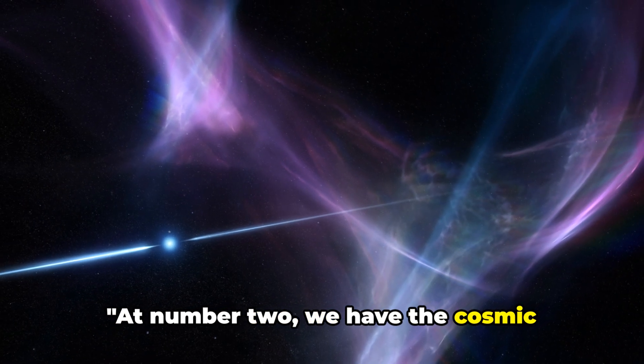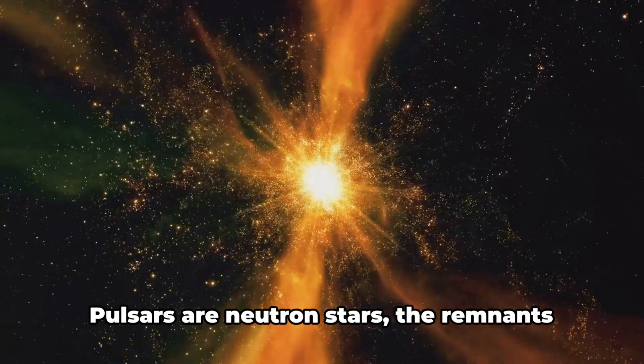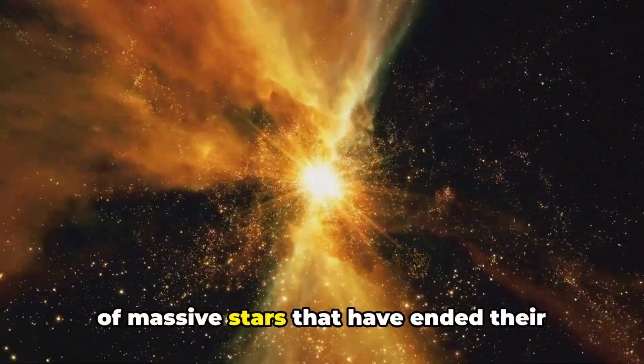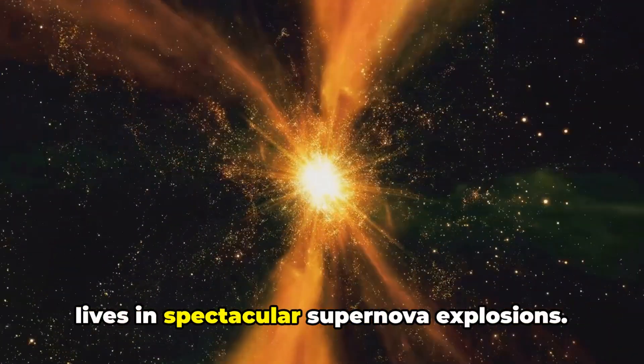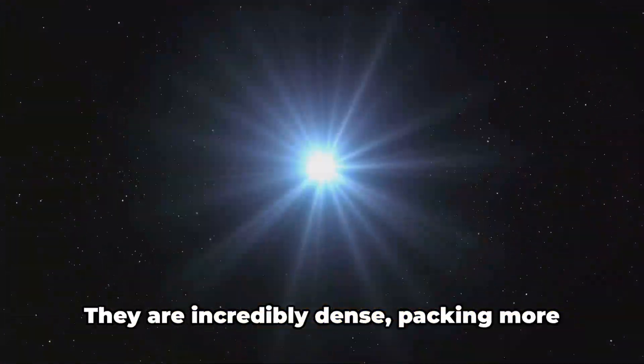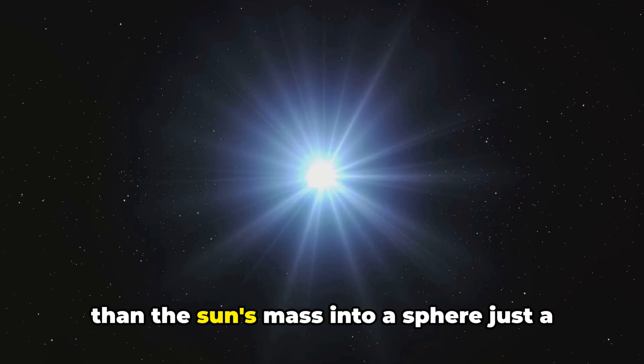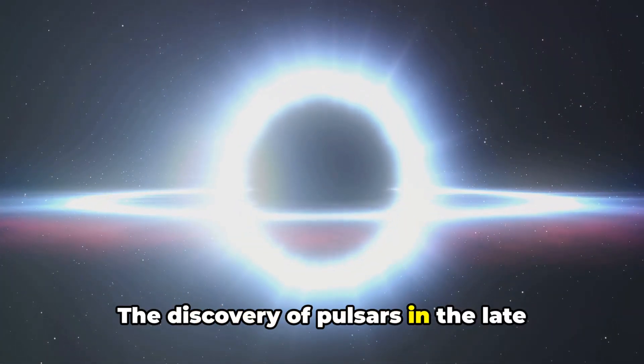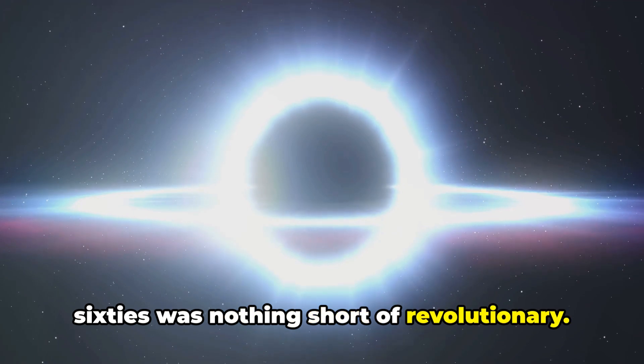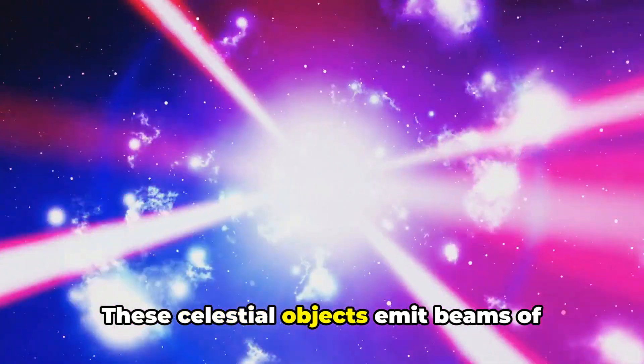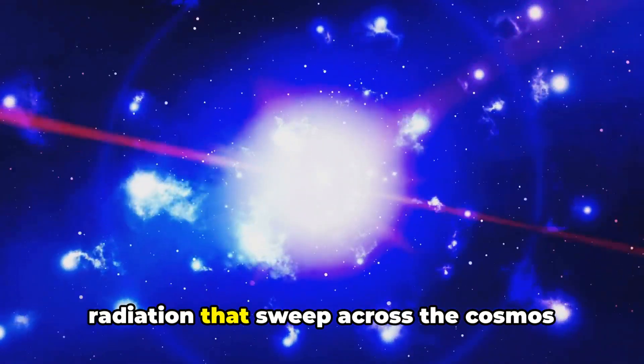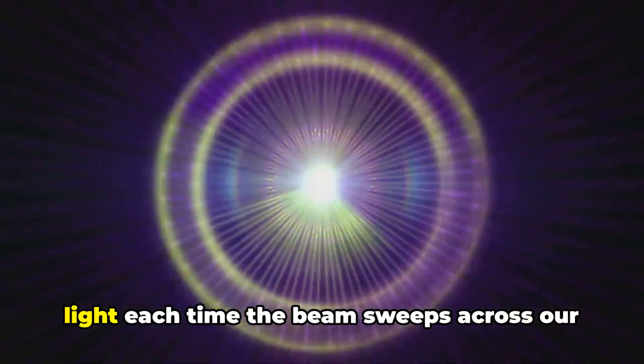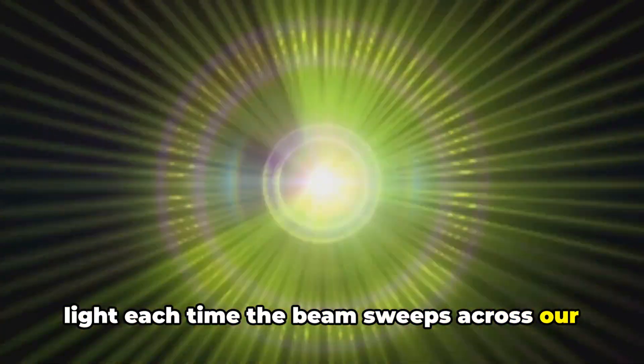At number 2, we have the cosmic timekeepers, pulsars. Pulsars are neutron stars, the remnants of massive stars that have ended their lives in spectacular supernova explosions. They are incredibly dense, packing more than the sun's mass into a sphere just a few miles across. The discovery of pulsars in the late 60s was nothing short of revolutionary. These celestial objects emit beams of radiation that sweep across the cosmos like lighthouses, and we detect a pulse of light each time the beam sweeps across our line of sight.